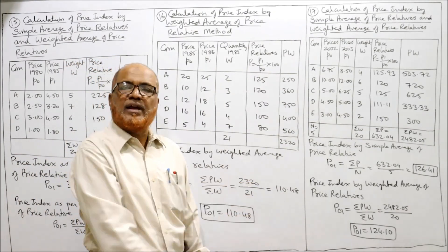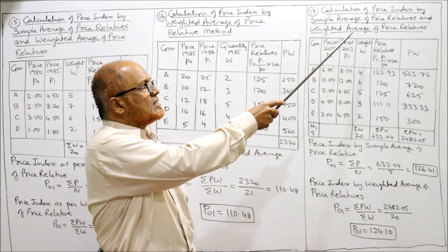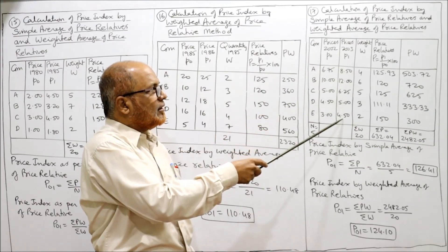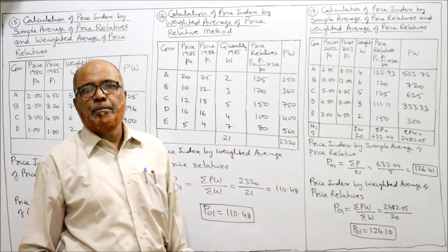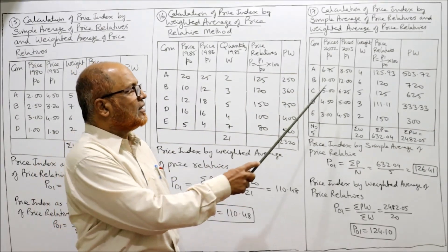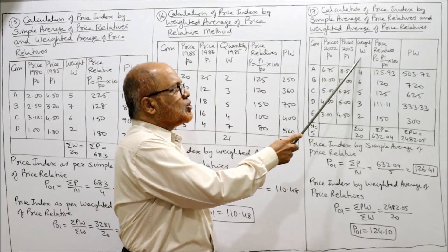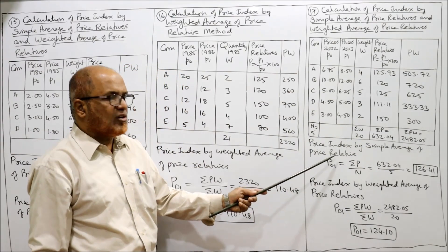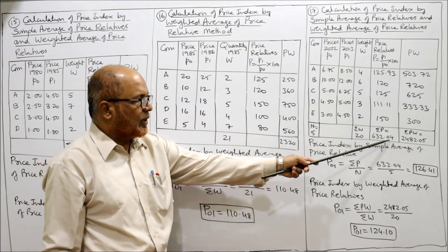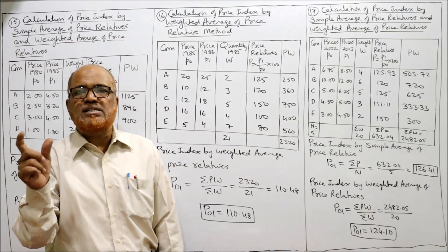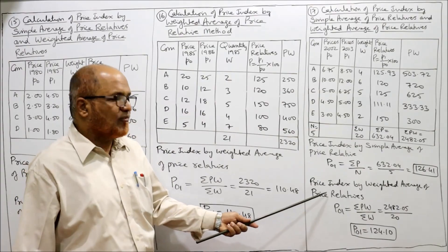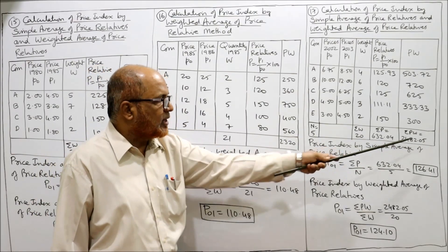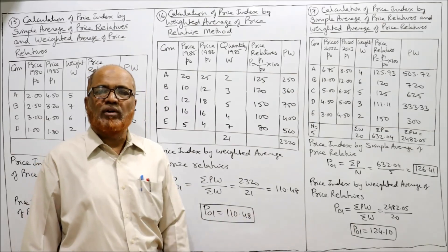Calculation of price index by simple average and weighted average. Commodities A, B, C, D, E; prices of 2002 (base year P0); price of 2003 (current year P1); weights are given. First calculate price relative P1 by P0 into 100 for every item, then multiply P into W to get PW. Take the total of PW, total of P, and total W. N equals 5. Price index by simple average: P01 = summation P by N = 632.04 divided by 5 = 126.41. Weighted average: summation PW divided by summation W = 2,482.05 divided by 20 = 124.10.